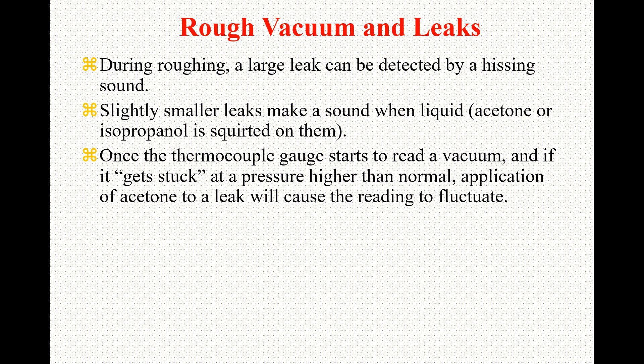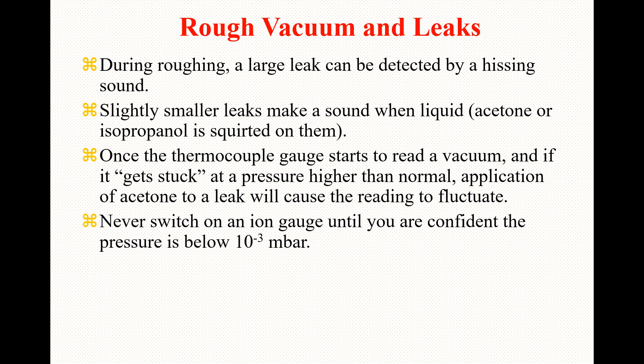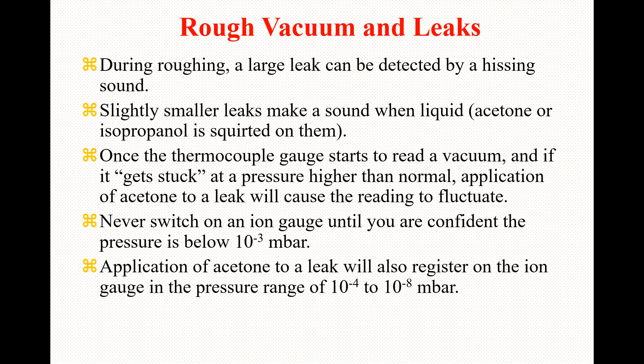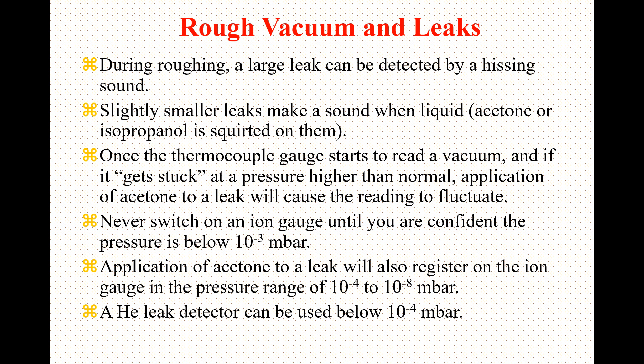One should focus on the gauge reading during roughing. Never switch on an ion gauge until you are confident that the pressure is below 10⁻³ millibar — that is a special precaution for the ion gauge. Application of acetone to a leak will also register on the ion gauge in the pressure range of 10⁻⁴ to 10⁻⁸ millibar. A helium leak detector can be used below 10⁻⁴ millibar.